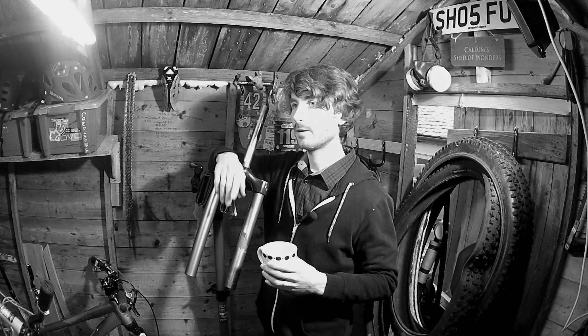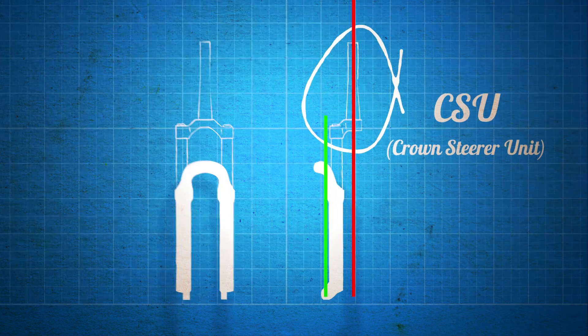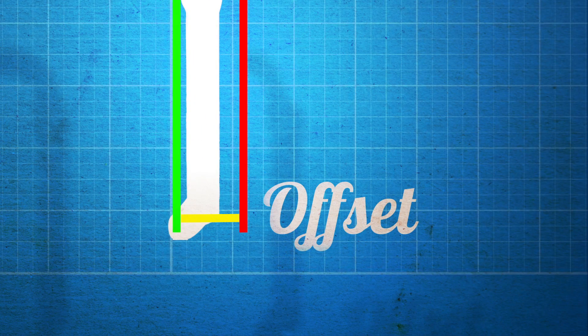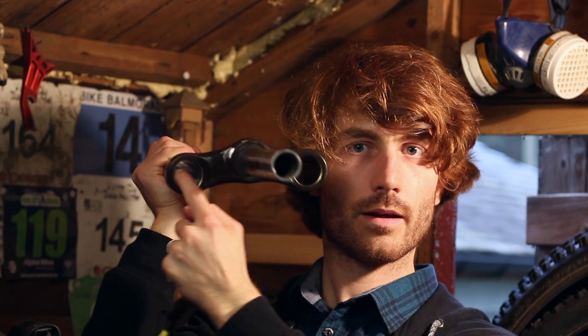This number, coupled with the fork offset, is what gives us our trail. Your fork offset is the distance between the imaginary line through the centre of the steerer to the centre of the hub axis. That offset is created by offsetting the dropouts and by putting a subtle bend in the crown.